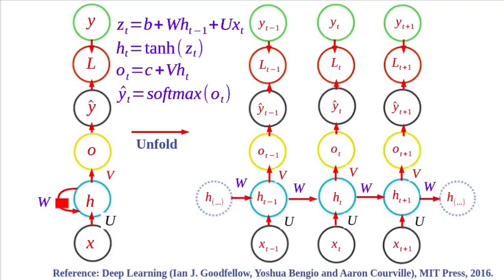In our previous class, we have seen introduction to RNN, different types of RNNs, and we have seen forward propagation in RNN. To train a neural network, we need to calculate loss based on predicted values and true values. Based on this loss, we need to adjust weights of the neural network. To adjust weights, we will use the gradient descent algorithm.